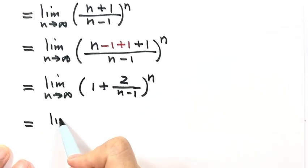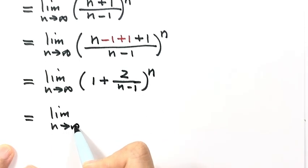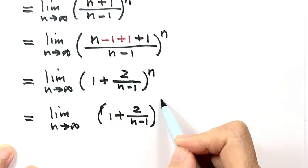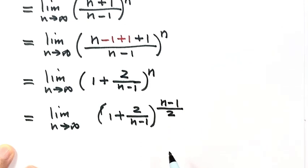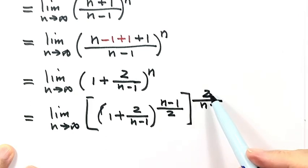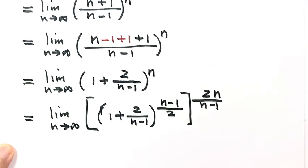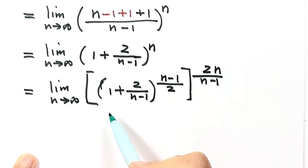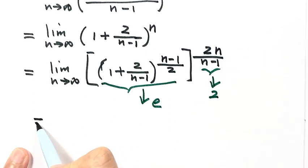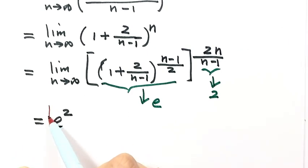Next, we rewrite the exponent. We have 1 plus 2 over (n minus 1), raised to the power of (n minus 1) over 2, then that whole thing raised to the power of 2. The 2s cancel and the exponent remains n. As n goes to infinity, the inside bracket goes to e, and this part goes to 2. So the limit as n goes to infinity is e squared.